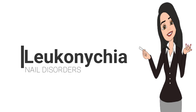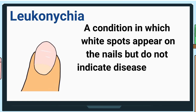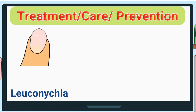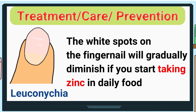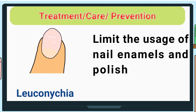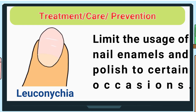Leukonychia is a condition in which white spots appear on the nail, but these do not indicate disease — as the nails grow, the white spots eventually disappear. Treatment: White spots on the fingernail will gradually diminish if you start taking zinc in your daily food. Limit the usage of nail enamels and polish to certain occasions.